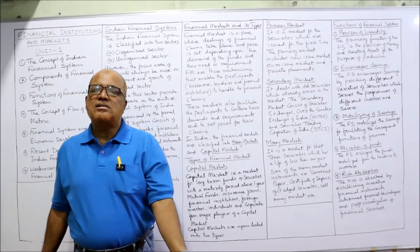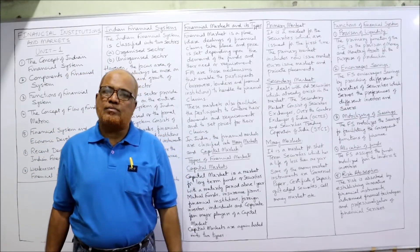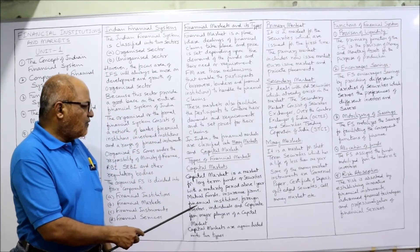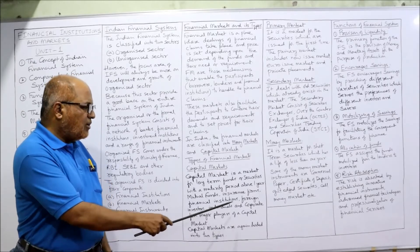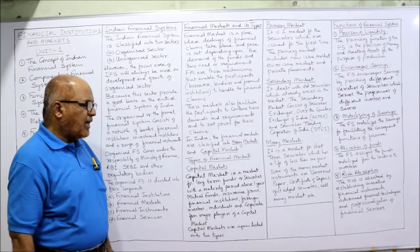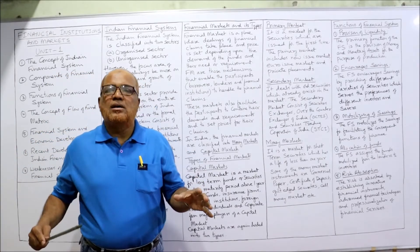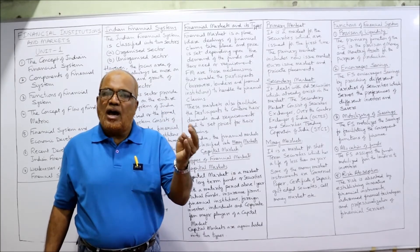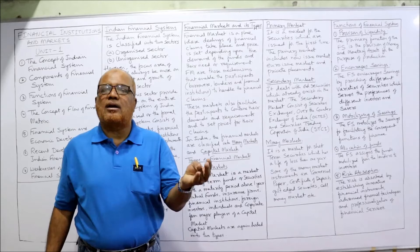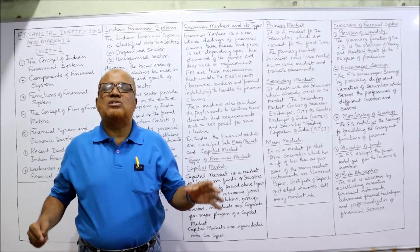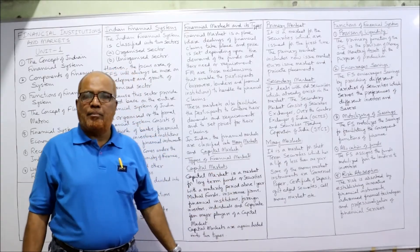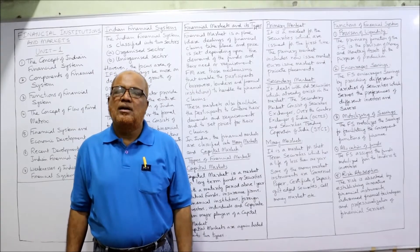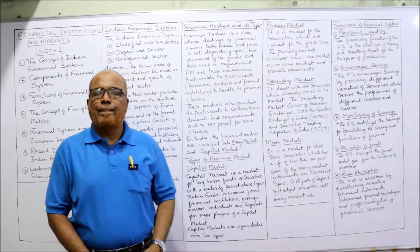The participants in the capital market normally include mutual funds, insurance firms, financial institutions, foreign investors, and individual and corporate investors — these are the major players. Capital markets are again divided into two categories: primary market and secondary market.